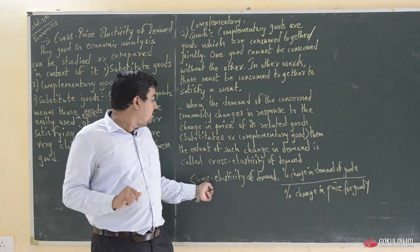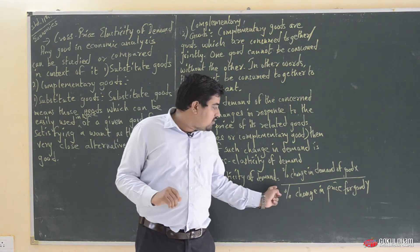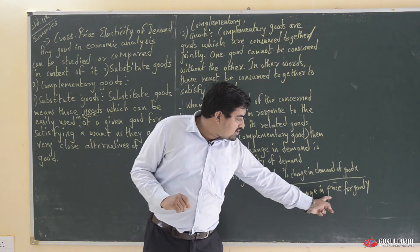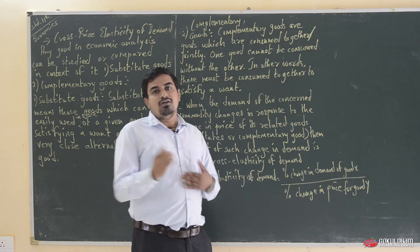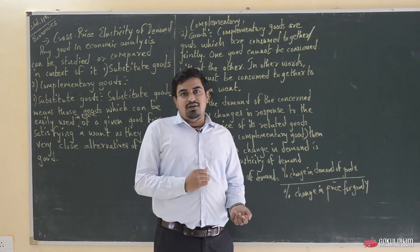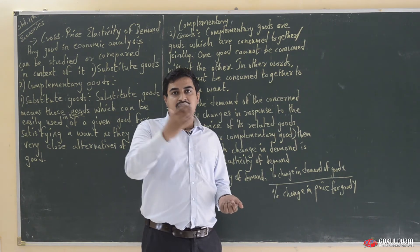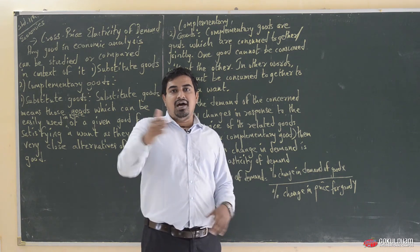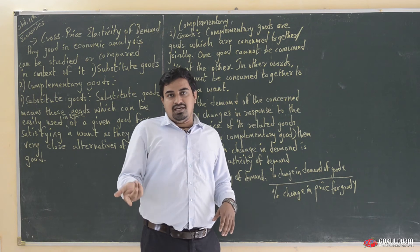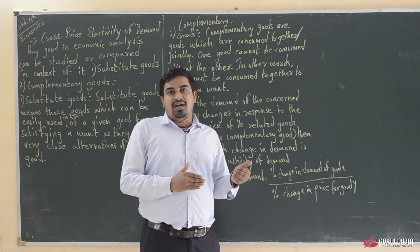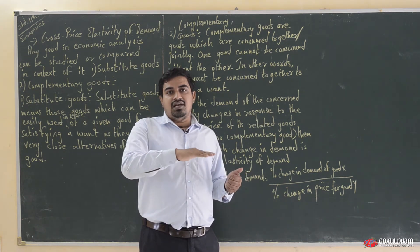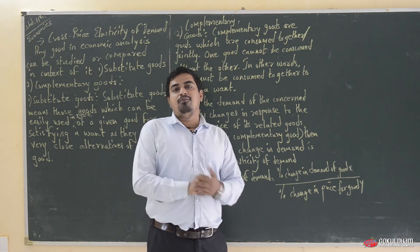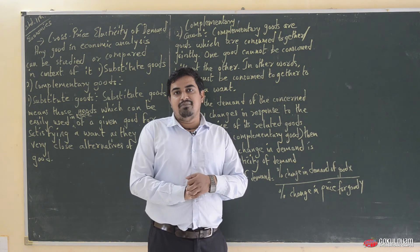Therefore, the formula is: Cross price elasticity of demand equals the percentage change in demand of goods X divided by the percentage change in the price of goods Y. So cross price elasticity of demand shows to what extent the demand for a commodity changes due to a change in the price of related goods — that is what cross price elasticity of demand shows you.